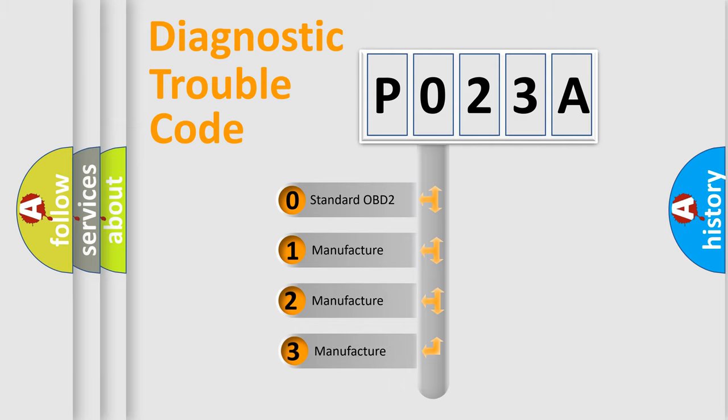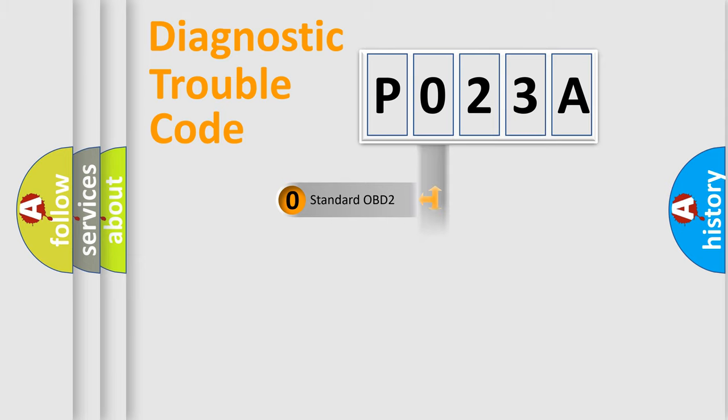If the second character is expressed as zero, it is a standardized error. In the case of numbers 1, 2, or 3, it is a more specific expression of the car-specific error.